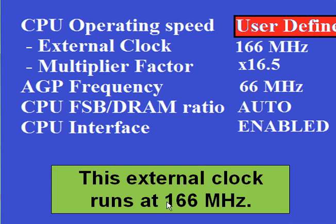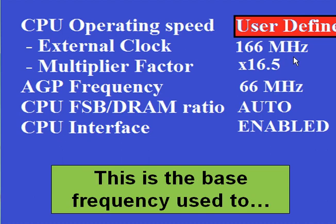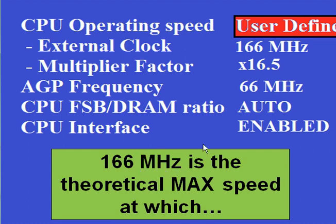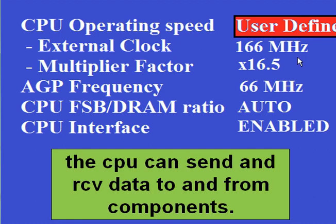This external clock runs at 166 megahertz. What does that mean? This is the base frequency used to synchronize the speed of their joint operations. It means that 166 megahertz is the theoretical maximum speed at which the CPU can send and receive data to and from components — that's as fast as it can get outside of the CPU die.